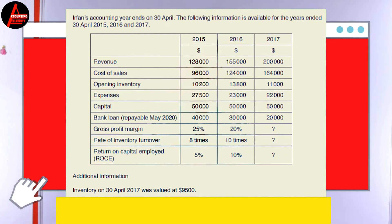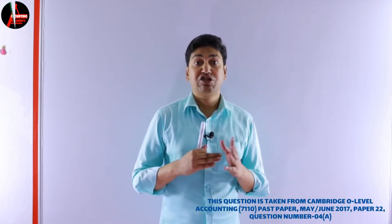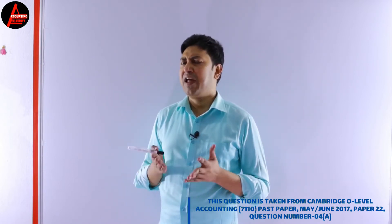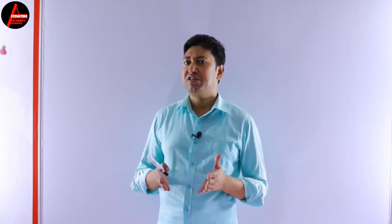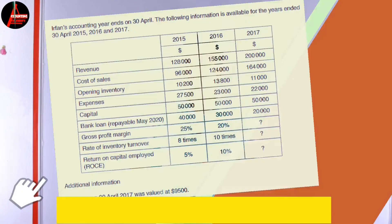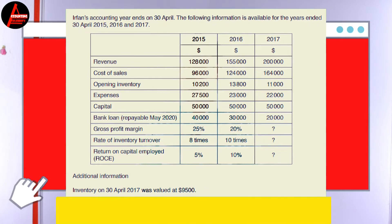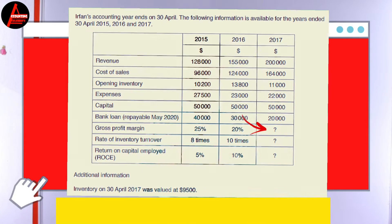So here is given: revenue, cost of sales, opening inventory, expenses, capital, bank loan, gross profit margin, rate of inventory turnover, and return on capital employed. For 2015 and 2016, all the information is given clearly. But look at 2017 — there are three question marks. Gross profit margin is not given, rate of inventory turnover is not given, and return on capital employed is not given. So now we need to calculate these three.